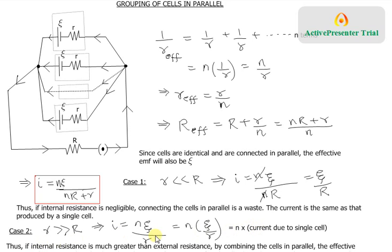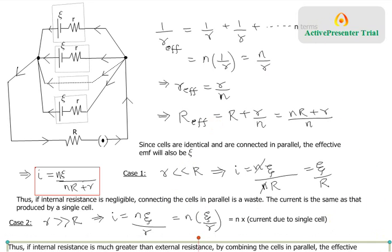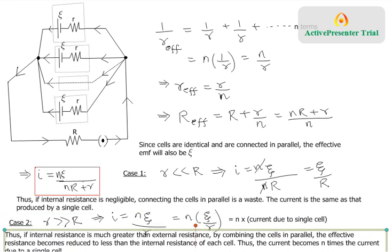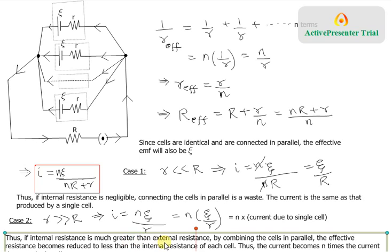To summarize: when the internal resistance is much greater than the external resistance, combining cells in parallel reduces the effective resistance to less than the internal resistance of each individual cell, and the current becomes n times the current due to a single cell.